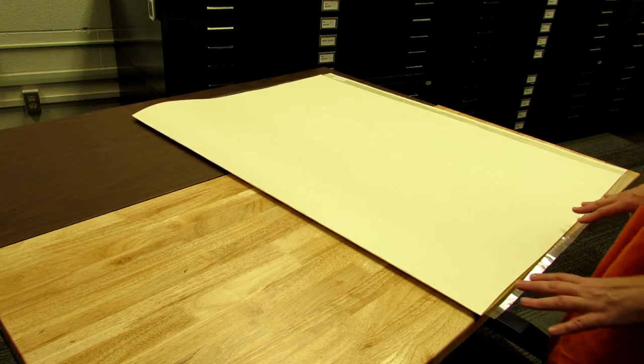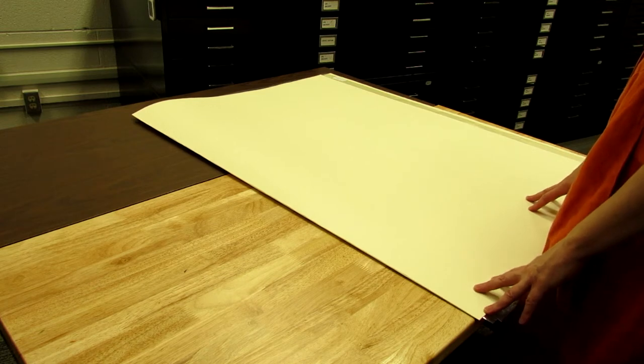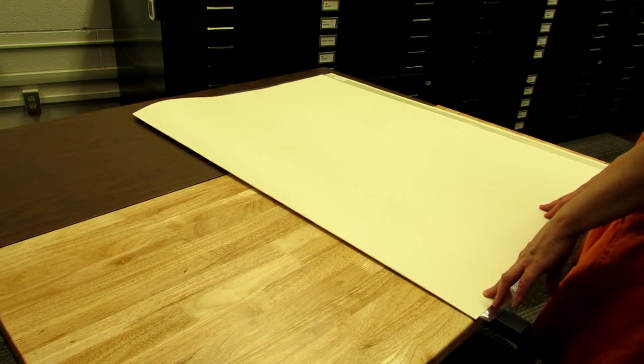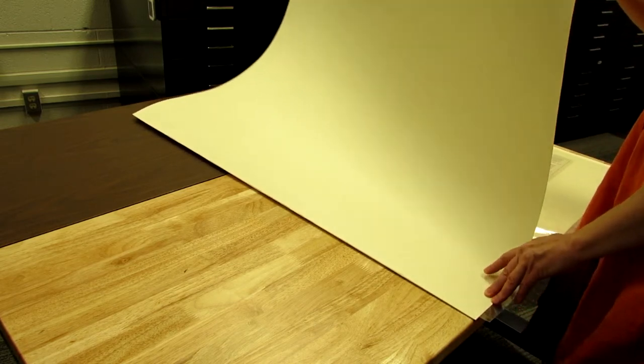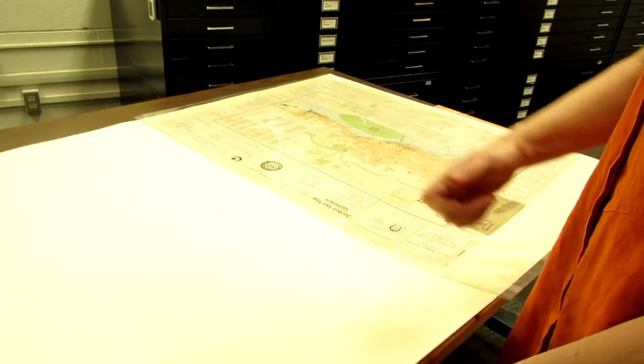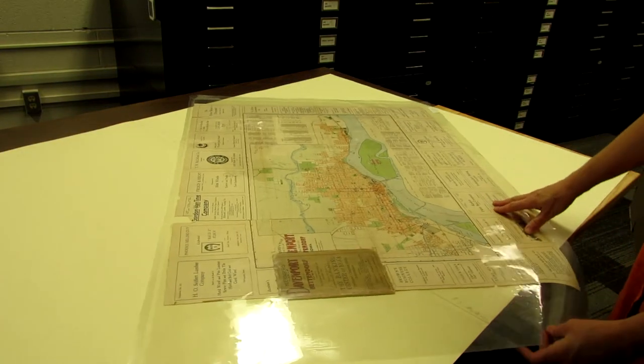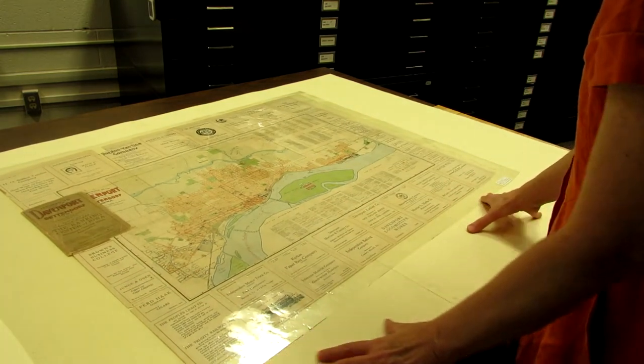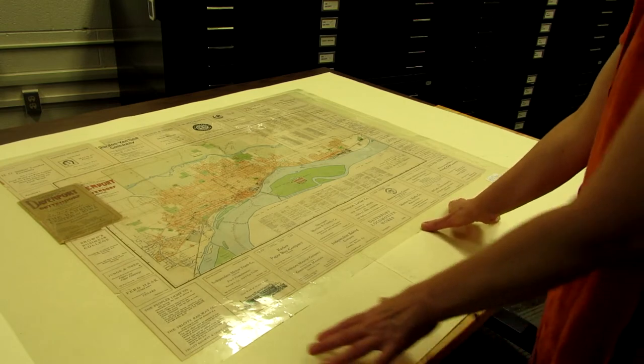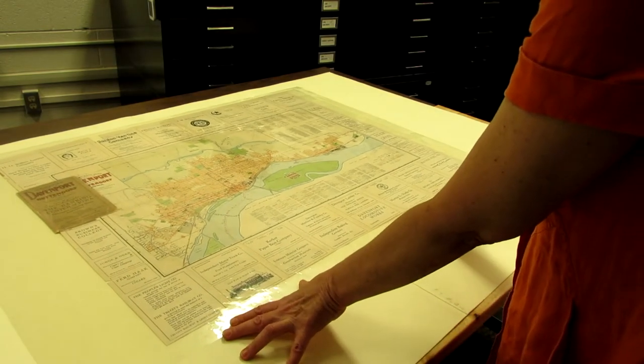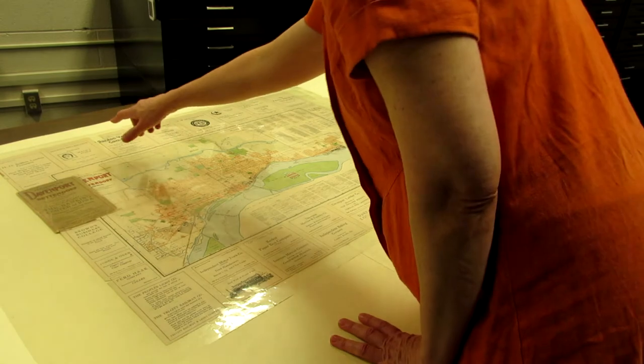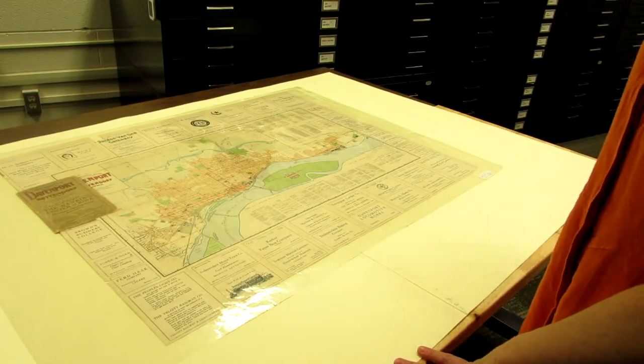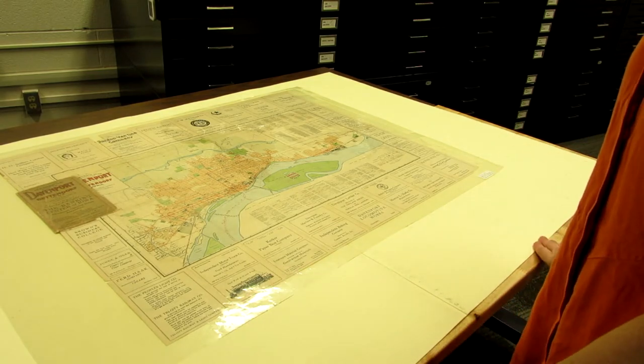We can also remove a large format document from the flat file drawer and place it on a board to be carried to your table. Here we have a map of Davenport from 1918 in color. When you're studying the map, avoid leaning on it to see something at the far edge. Instead walk around the table with an item this large and have a look.